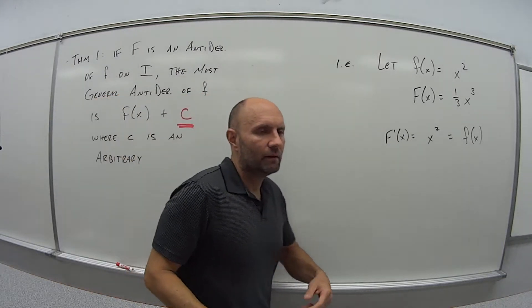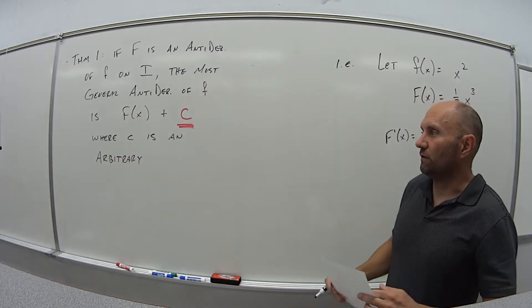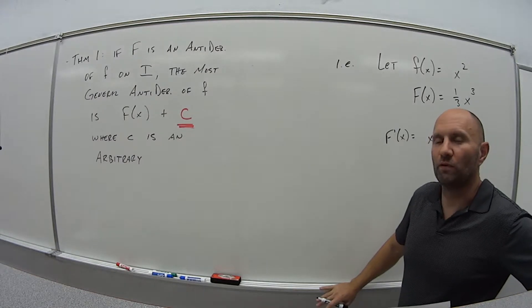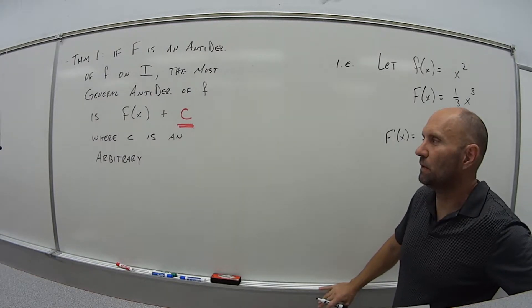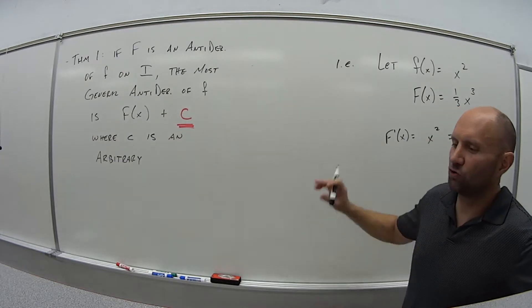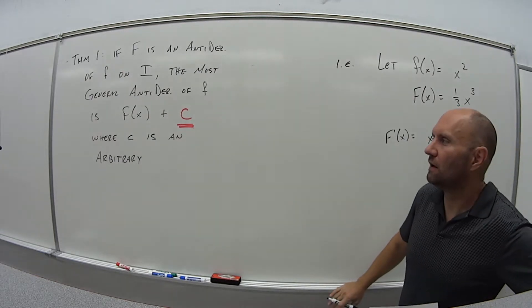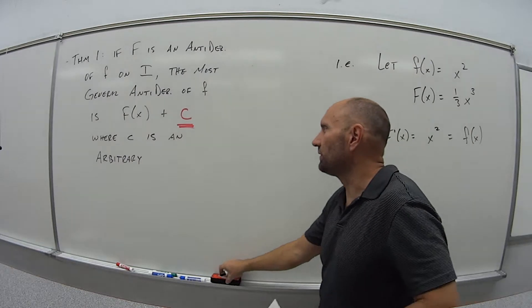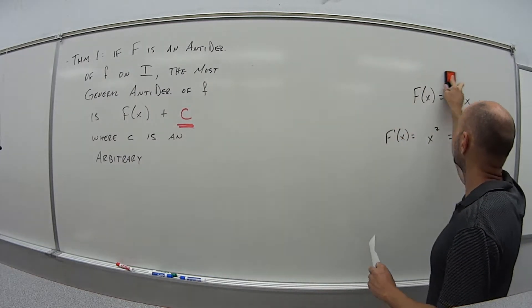And I'm actually going to switch this up here. I'm going to write this C in red and underline it. Reason being, as you guys are doing some of the homework, hopefully not on the exam making this mistake, but you'll put in an answer and it'll say wrong. And it's because you're forgetting this constant. Why do we have to put this C there?